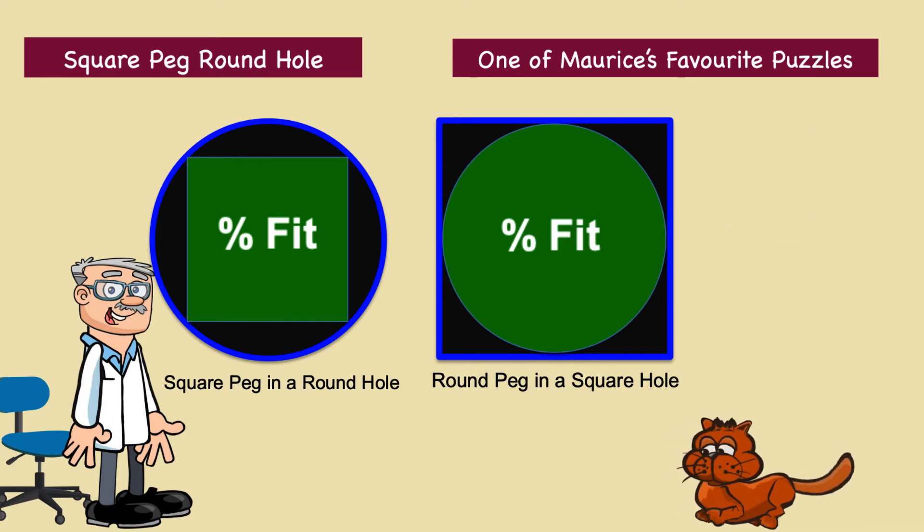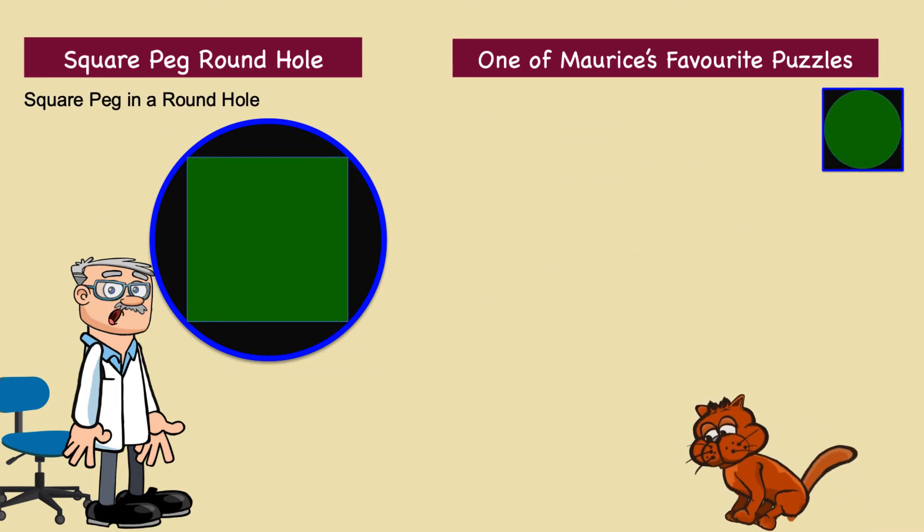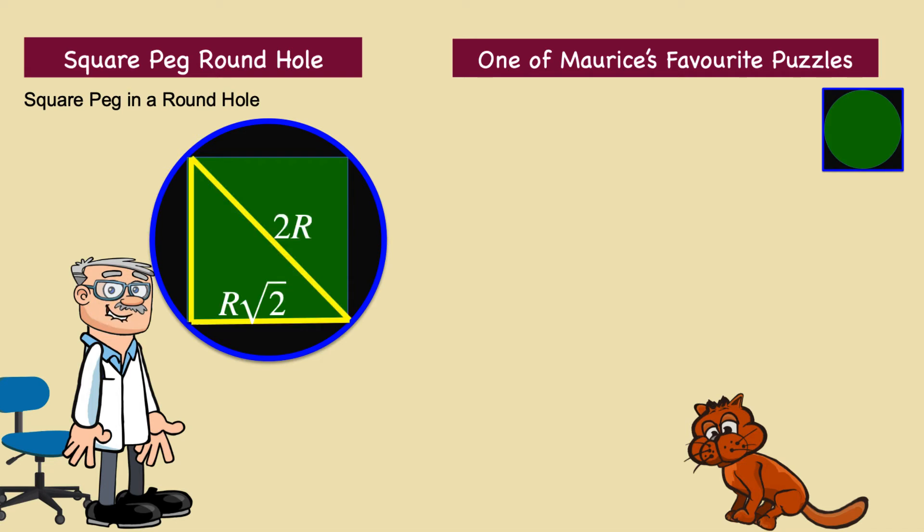Here is the answer. Let us first consider a square peg in a round hole. If we let the round peg have a radius r, then that means the square's diagonal measures 2r. The triangle formed by the square's diagonal and its two sides is an isosceles right-angled triangle. By the Pythagorean theorem, we can solve for the square's side, which is r root 2.